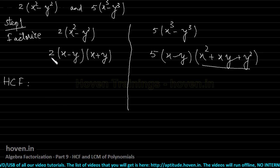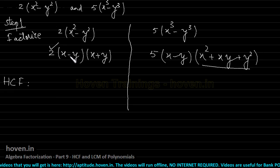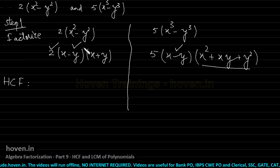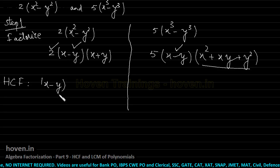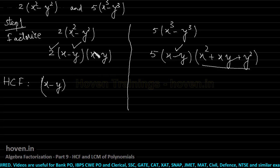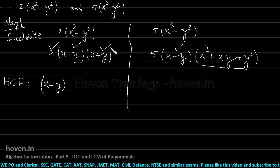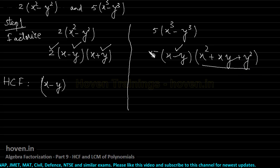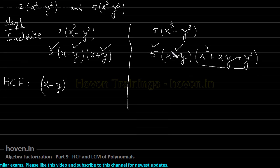Now apply the HCF algorithm. Start with 2: it is on this side but not on the right side, so tick and ignore it. (x−y) is on this side — tick — and also on the right side — tick. The lower power of 1 and 1 is 1, so we take (x−y). Move to (x+y): tick mark here, but it does not appear on the right side, so ignore it. Start with 5: not on this side, ignore. (x²+xy+y²) is also not on the left side, so ignore it. Therefore the HCF is (x−y).